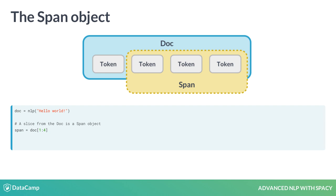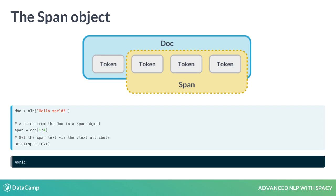For example, 1 colon 3 will create a slice starting from the token at position 1, up to, but not including, the token at position 3.